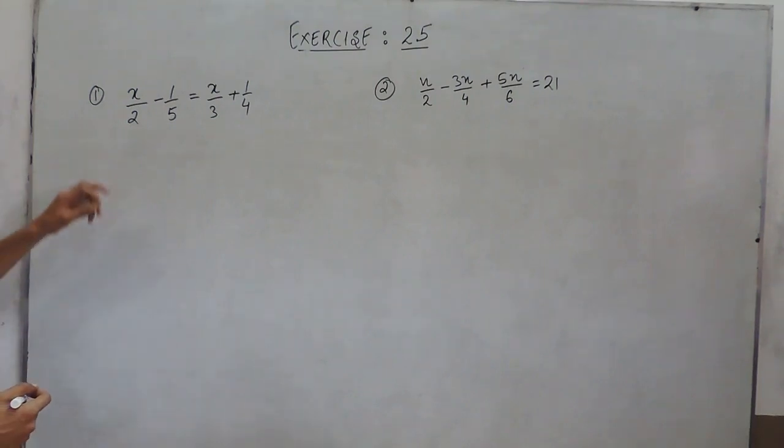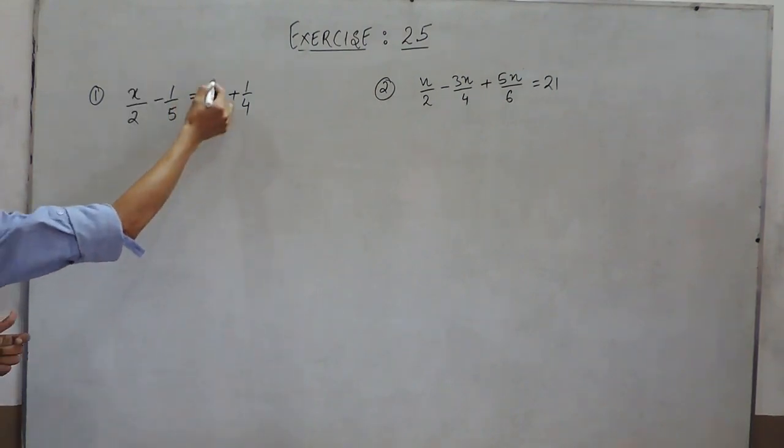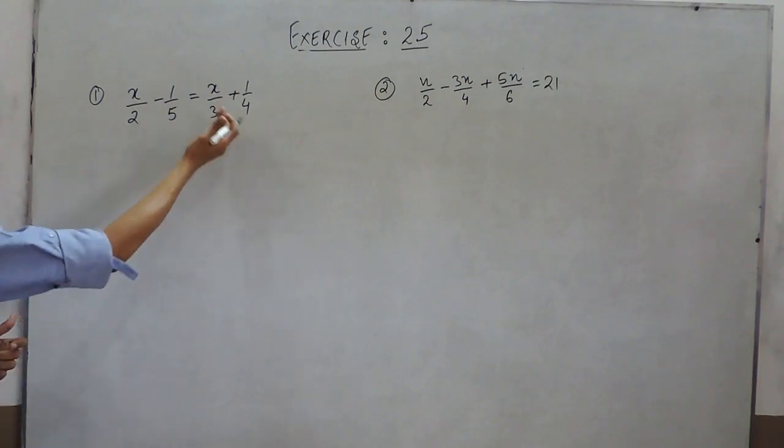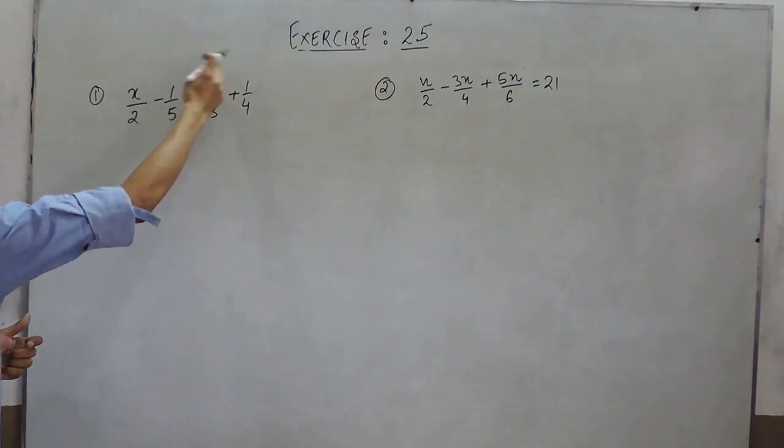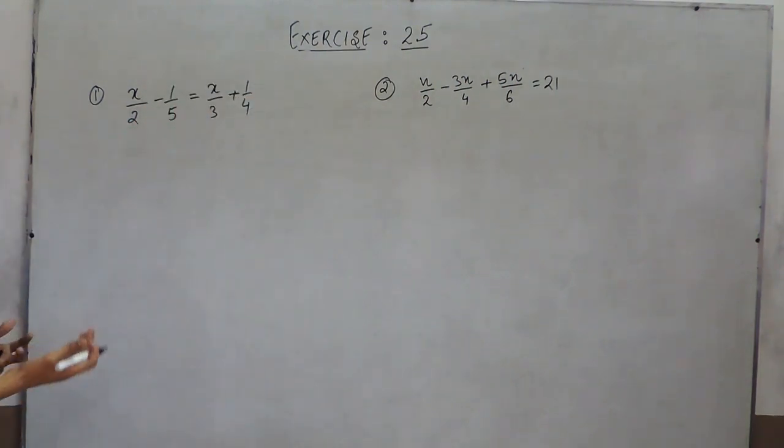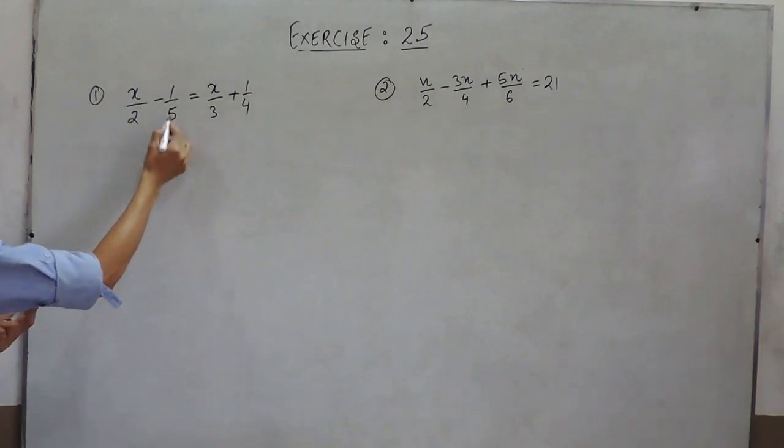In question number 4, we have to solve this particular equation. There can be two ways of solving this. First, you can shift these variables to one side and then constants to the other side, or directly you can take the LCM first and then you can shift it.